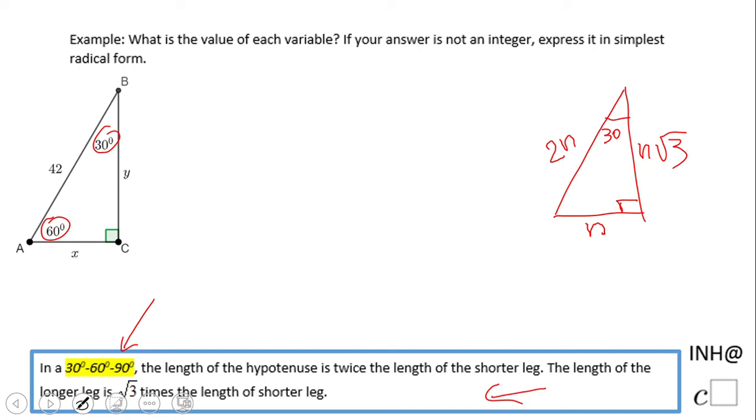Now we look at our problem and we notice x is here, y is here. As I said, 42 which is the hypotenuse should be twice this leg which is on the other side of the 30 degree angle. So we need to find x: 42 divided by 2, x equals 21. That's the first thing you want to find out.